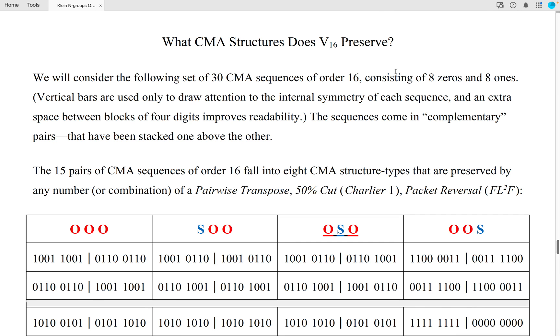So what CMA structures does the Klein 16 group preserve? We will consider the following set of 30 CMA sequences of order 16, consisting of 8 zeros and 8 ones. Vertical bars are used only to draw attention to the internal symmetry of each sequence. And an extra space between blocks of 4 digits improves readability. The sequences come in complementary pairs that have been stacked one above the other.